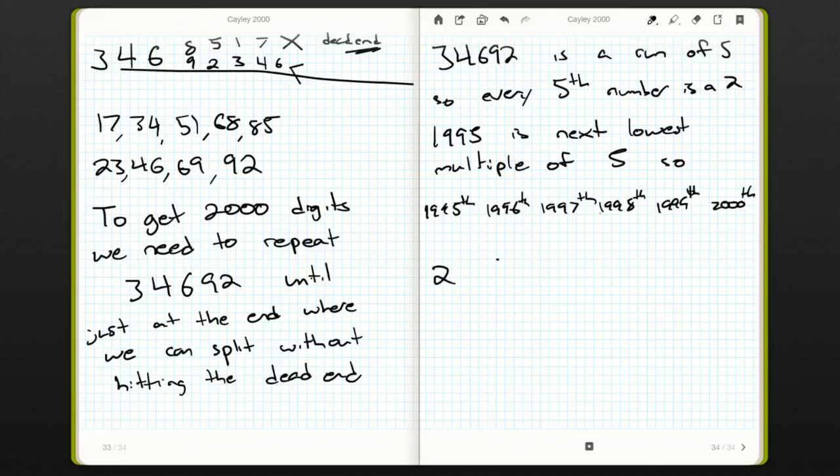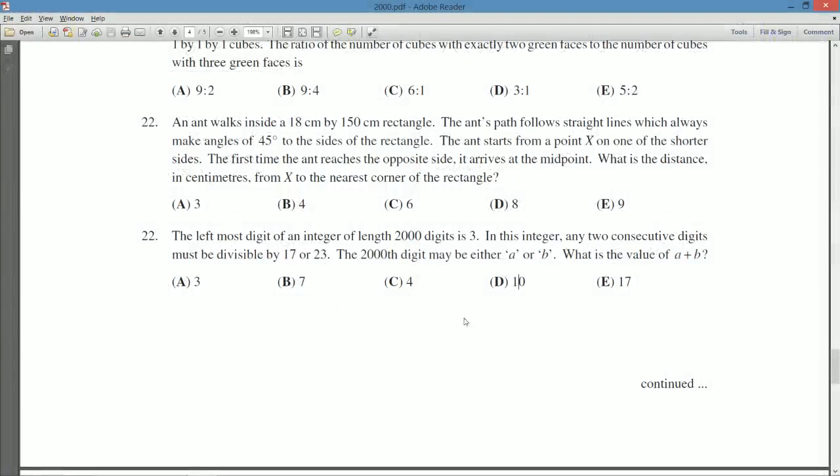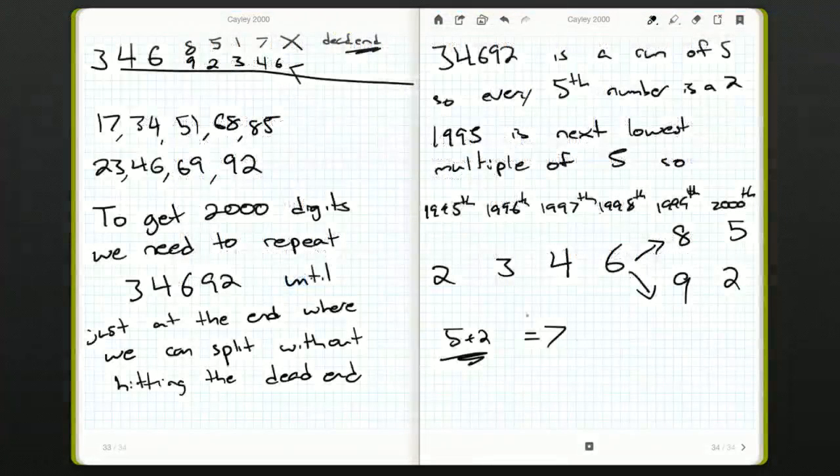So we definitely have a two here. Following that two, we've got to have a three, and then a four, and then a six. These are things we already determined. If you have a two, you got to go twenty-three, and then thirty-four, then forty-six. It's six where we split. So we could have an eight or a nine, followed by a five or a two. Five plus two is seven. I think that was B. Yes, it was. So B is our answer.